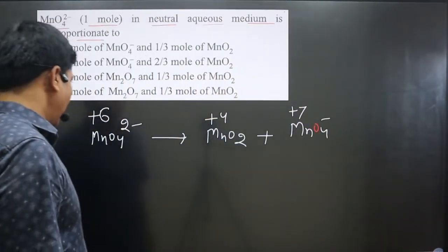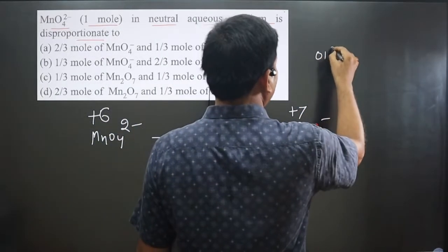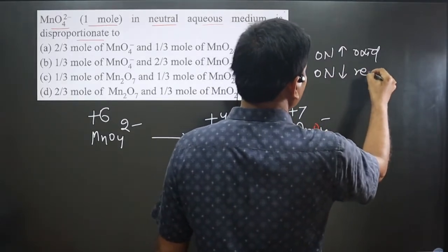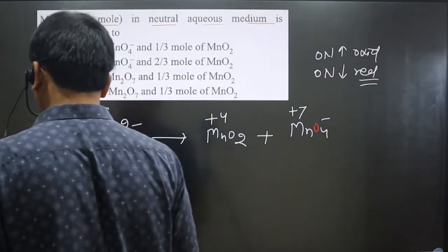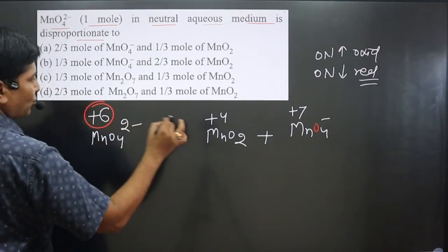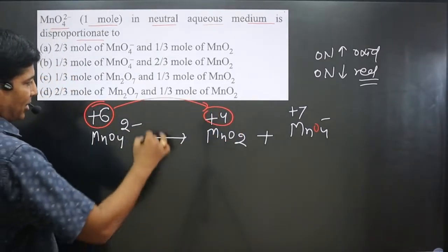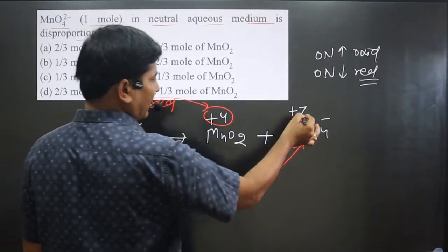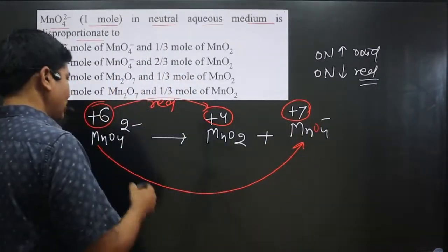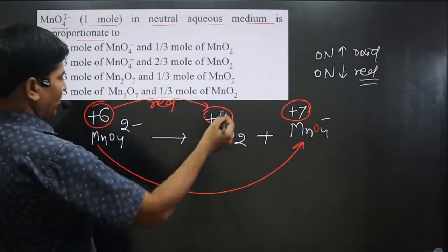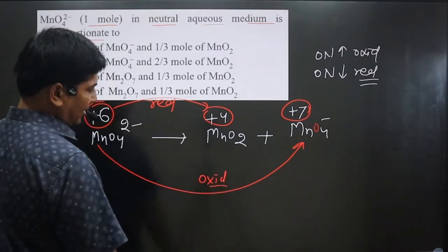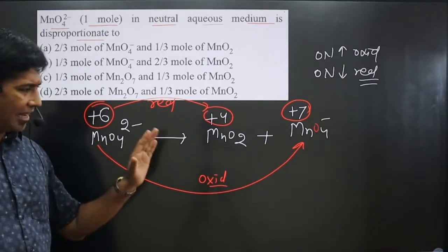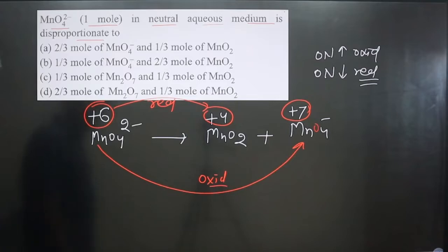Always keep in mind: increase in oxidation number is always oxidation, and decrease in oxidation number is always a reduction reaction. Now comparing: plus six to plus four — decrease in oxidation number — that is a reduction reaction. And comparing with the permanganate ion MnO₄⁻: plus six to plus seven — increase in oxidation number — that is an oxidation reaction. Hence, same element is undergoing both reduction and oxidation, so it is an example of disproportionation.